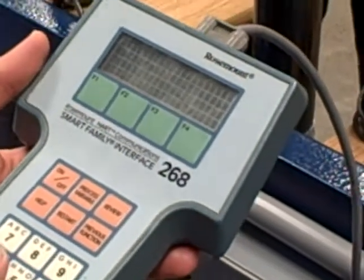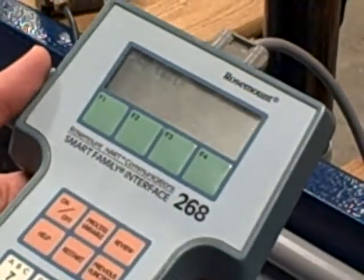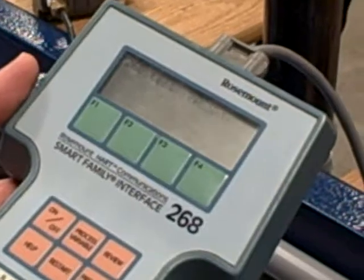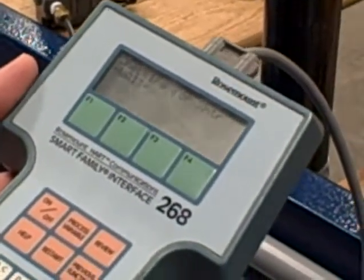Yep, start. Okay, alright. So we are firing up the Rosemount 268 HART communicator. We're going to do a trim on the sensor of this transmitter. It's a Rosemount 3051.